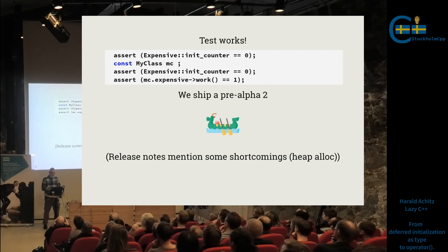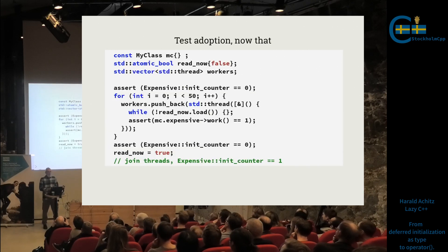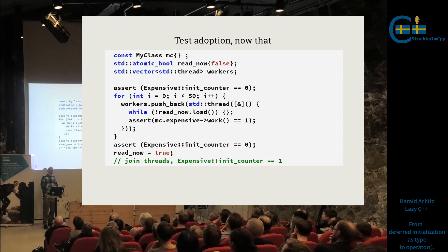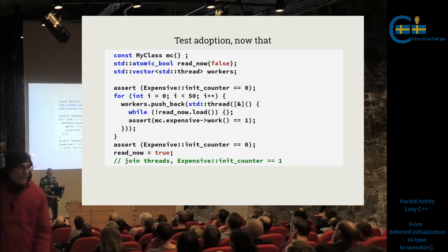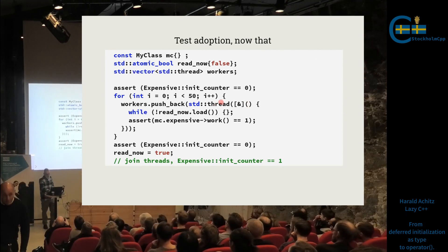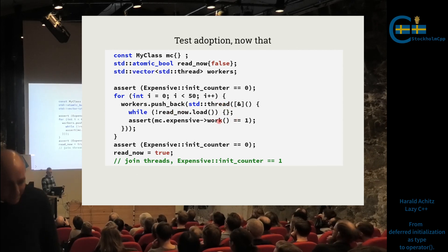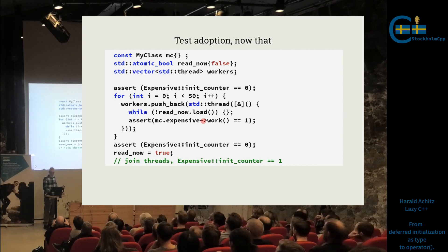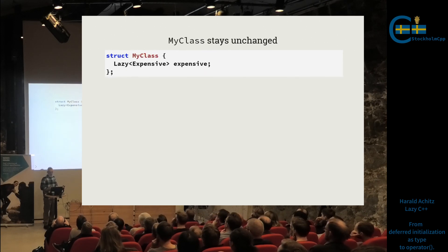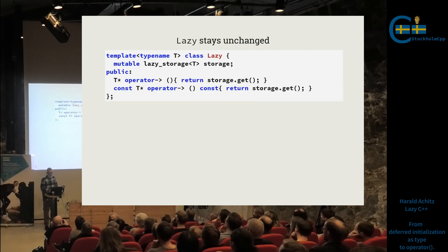With those changes the tests work and we can ship the next iteration. But users come back: even embedded devices have multiple CPUs these days. My config class is read from in multiple threads — can you make this work? Yes. The test adds a bunch of threads that all busy-wait for a start signal, then call the function. We want it initialized exactly once. Now let's implement thread-safe lazy storage.